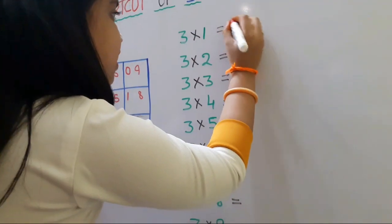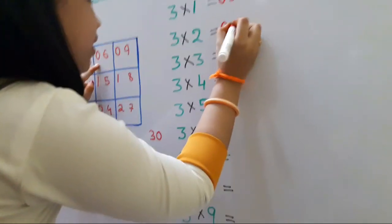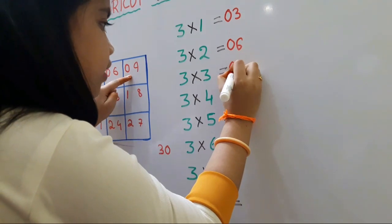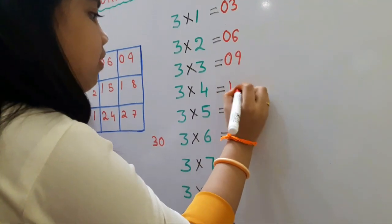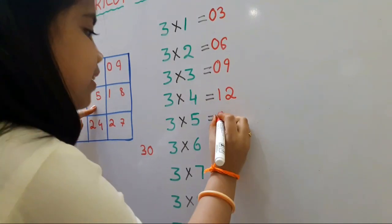3 ones are 3. 3 twos are 6. 3 threes are 9. 3 fours are 12. 3 fives are 15.